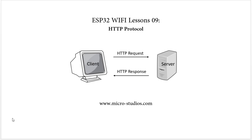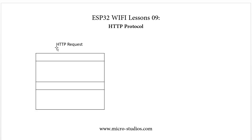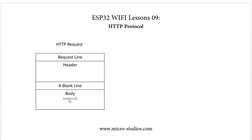For the HTTP request, it has four parts. The first one is a request line. The second one is a header. The third one is a blank line. The last one is a body of the message. The message body is optional.